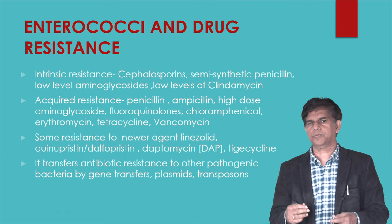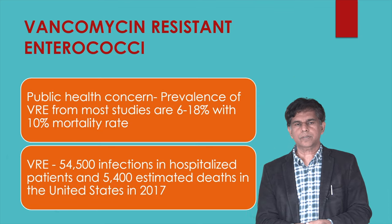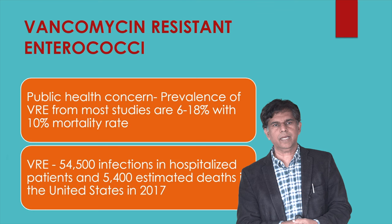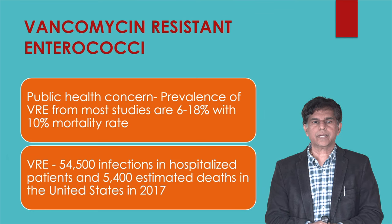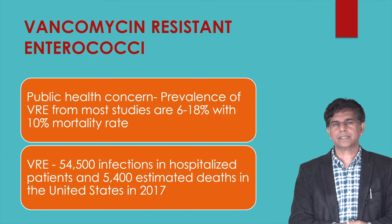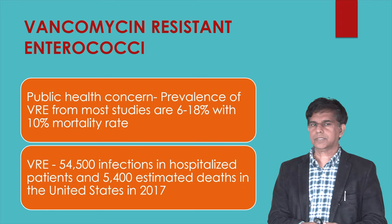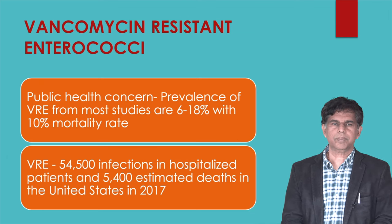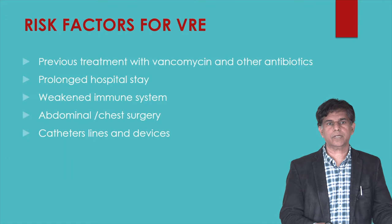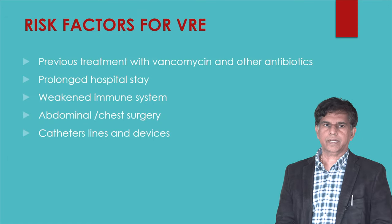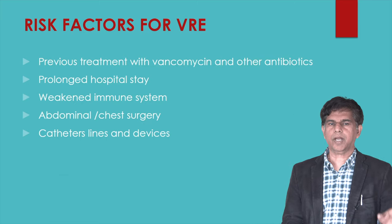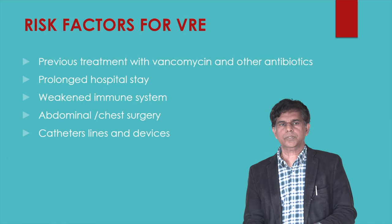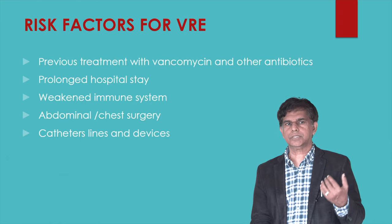Vancomycin-resistant Enterococci (VRE) is a major public health concern. Most studies report 6 to 18% infection rates with a 10% mortality rate. There were approximately 54,000 infections in hospitalized patients, and around 5,400 people died in the United States in 2017. Risk factors for VRE include previous treatment with vancomycin or other antibiotics, prolonged hospital stay, compromised immune system, abdominal or chest surgery, catheter lines and devices, and genitourinary system involvement.